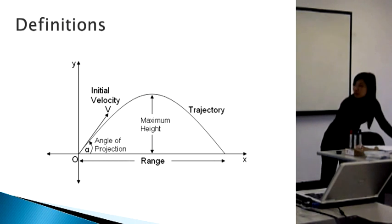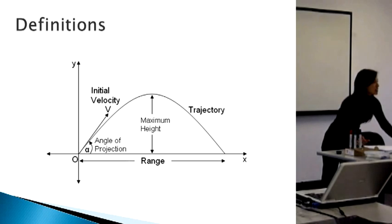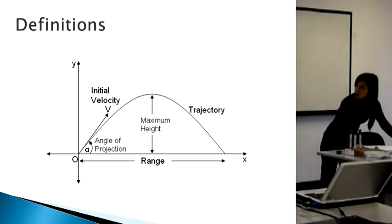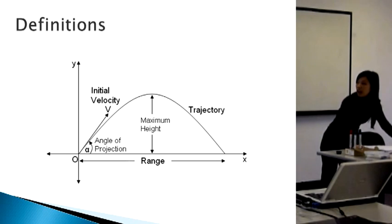Let's look at some definitions. You need to know this because in the question, it uses these terms, so you need to know what each term is talking about. For example, when you're projecting something, you will project that at an angle — that is called the angle of projection.